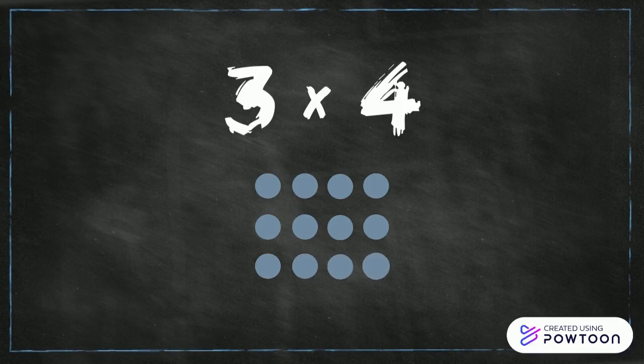We can start by making one row of four, then the second row of four directly below that, and then the third row of four below that. Now we have three rows of four.